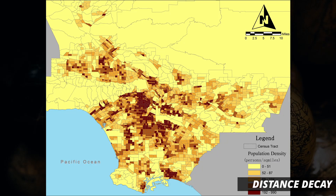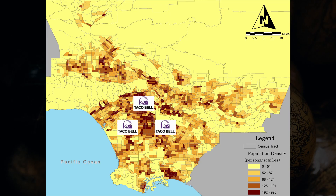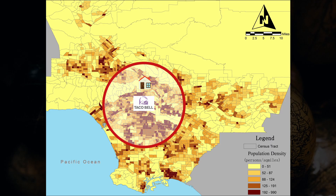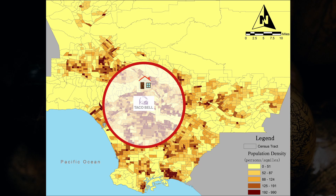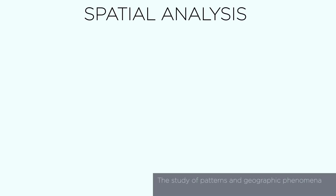Now let's talk about distance decay, which states that interactions are more likely the closer you are and less likely the further you are. Use Taco Bell as an example — you have all these Taco Bells in this region, but you chose the one closest to you. This is because when a business is closer to you, you are more likely to have an interaction with it because you are within their hinterland, which is their sphere of influence. The further you are from that Taco Bell, the less likely you are to visit it. This concept of spatial analysis — the study of patterns and geographic phenomena across space — is also known as locational analysis.